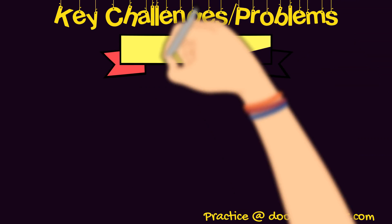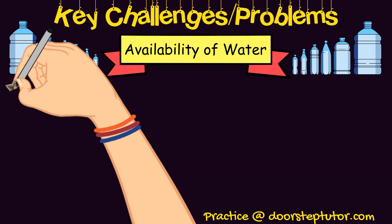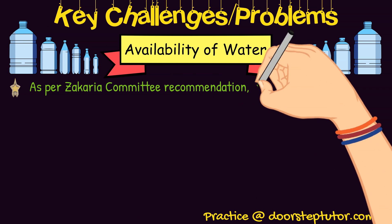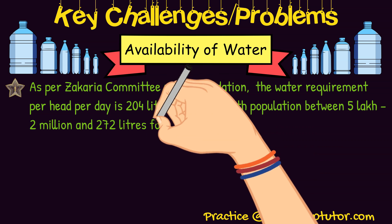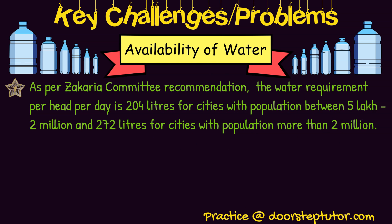Regarding availability of water, the Zakaria Committee recommended that the water requirement per head per day is 204 liters for cities with a population between 5 lakh and 20 lakhs, and 272 liters per head per day for cities with a population of more than 2 million. The issue in India is that because of ever-growing population and limited sources of drinking water, this minimum daily water requirement is not met.